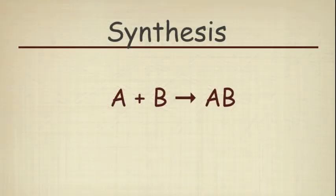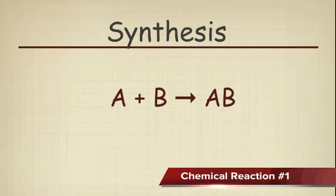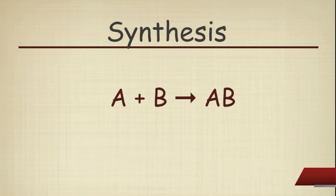And first on the list is a synthesis reaction. Now a synthesis reaction is where there are two different elements on one side and a compound on the other side that the elements form. As you can see, A plus B is on the left and AB is on the right.